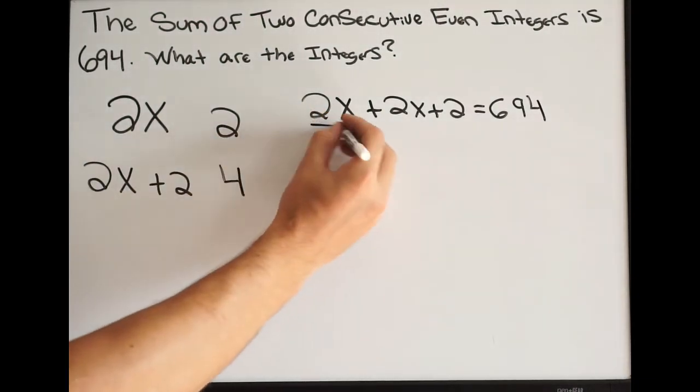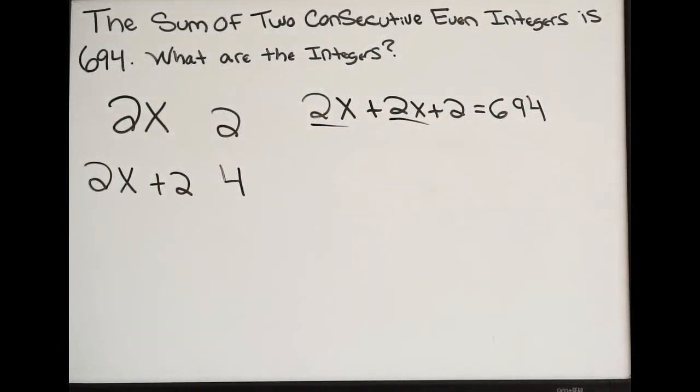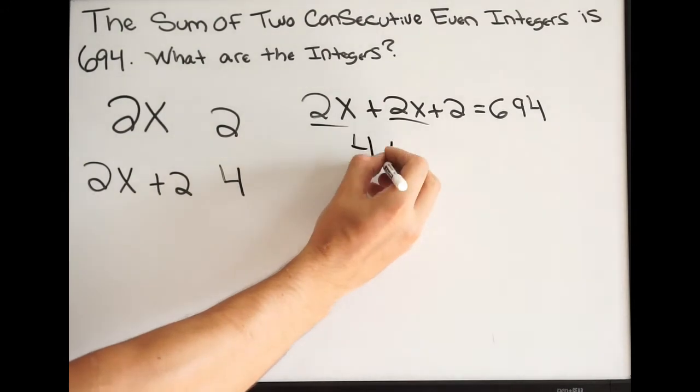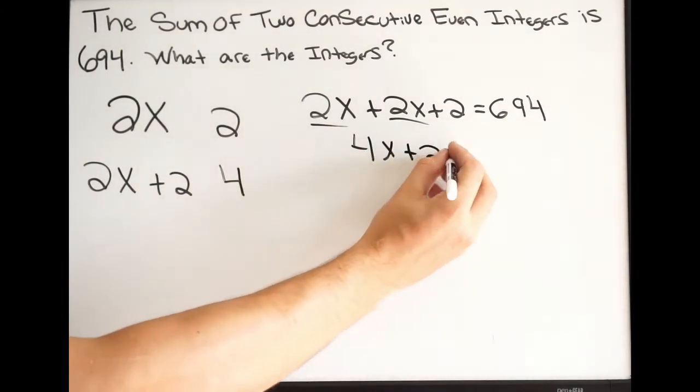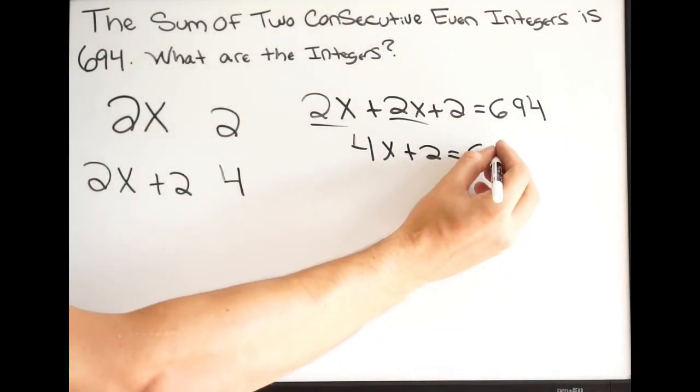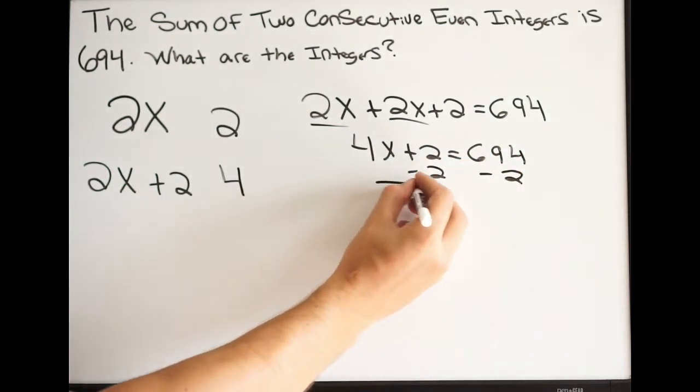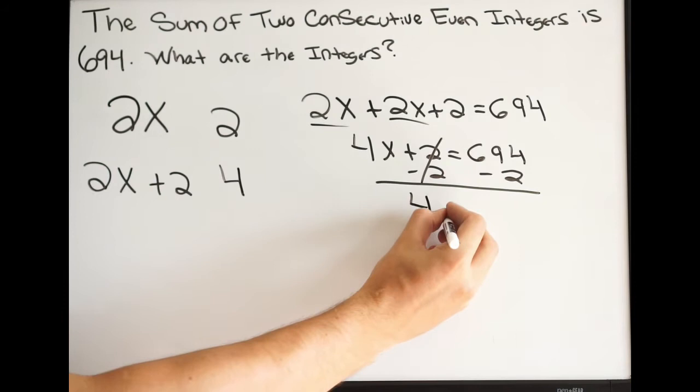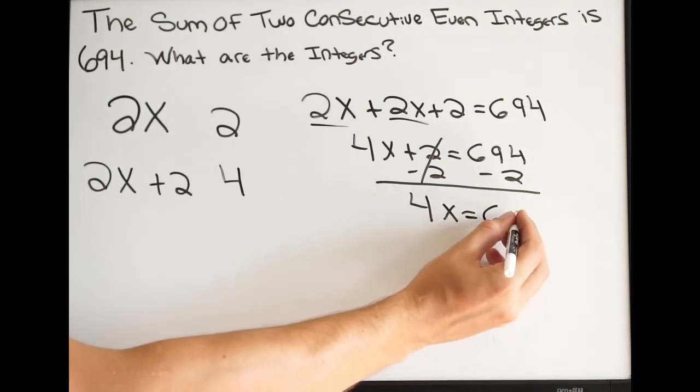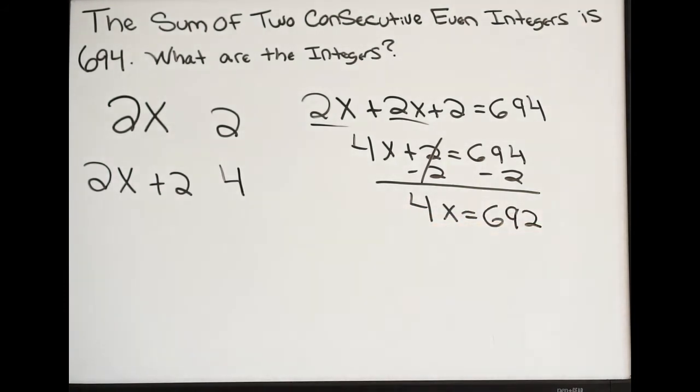At this point, I'm just going to combine my like terms. So essentially, we're solving for x. So we get 4x plus 2 equal to 694. We want to subtract 2 on both sides. So we get 4x equal to 692. So what we're going to do at this point is divide by 4 and see what x is. So we get 692 divided by 4, and we get 173.